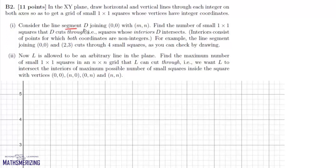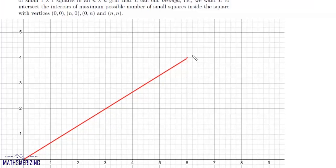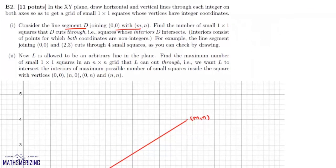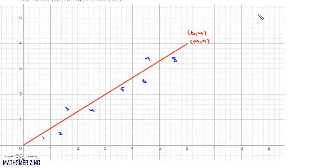In B2, consider line segment D joining the origin with point (m, n). We need to find the number of small unit squares that D cuts through — that is, squares whose interiors D intersects. The equation of this line is y equals (n/m) times x.